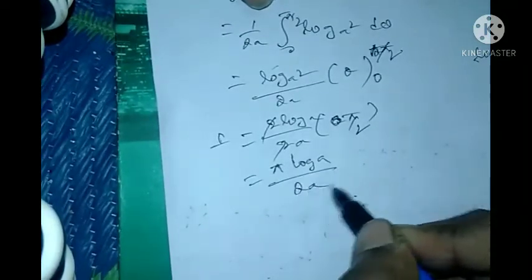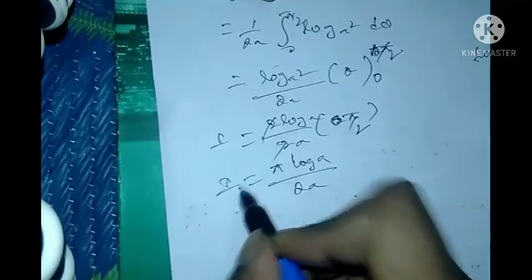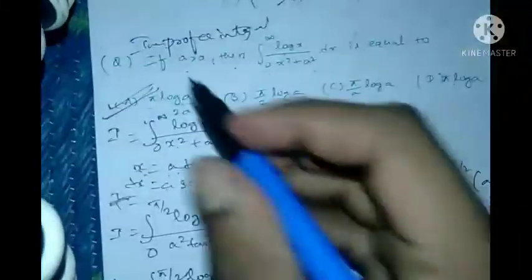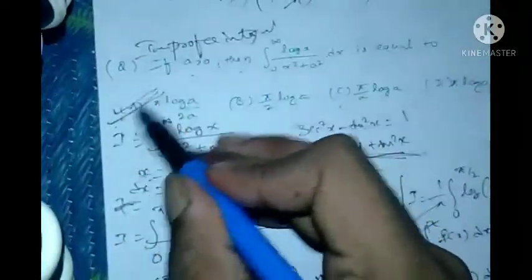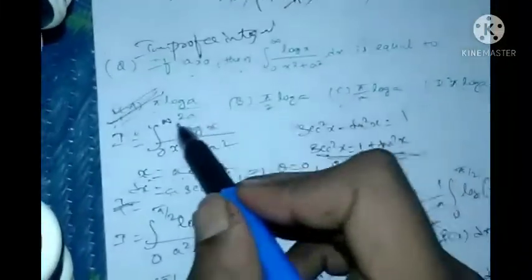Therefore I = π·log(a)/(2a), and the correct option is option A.